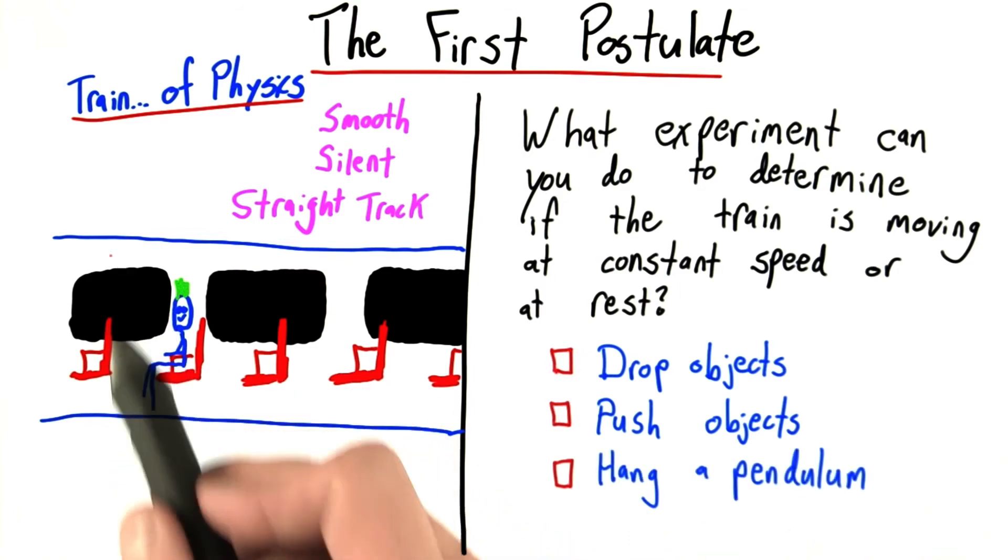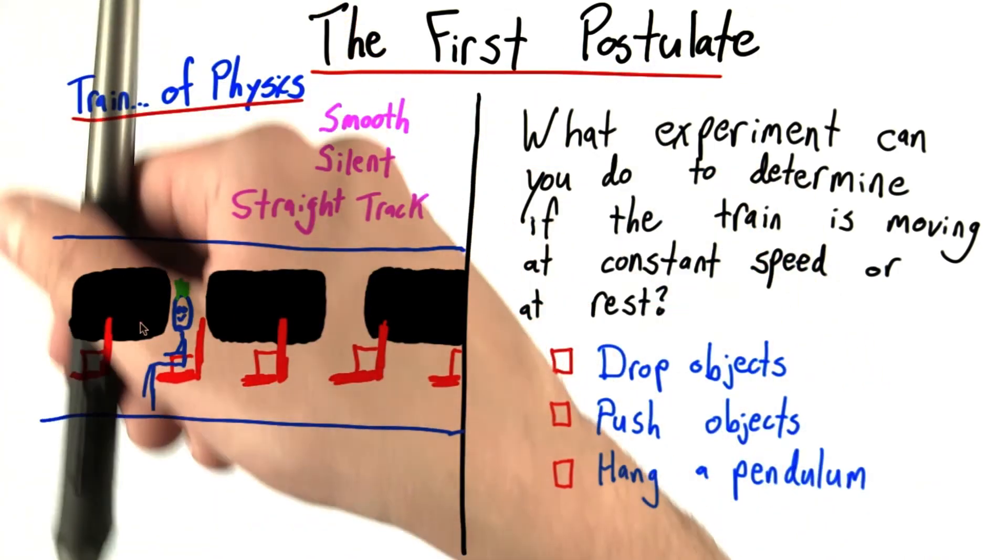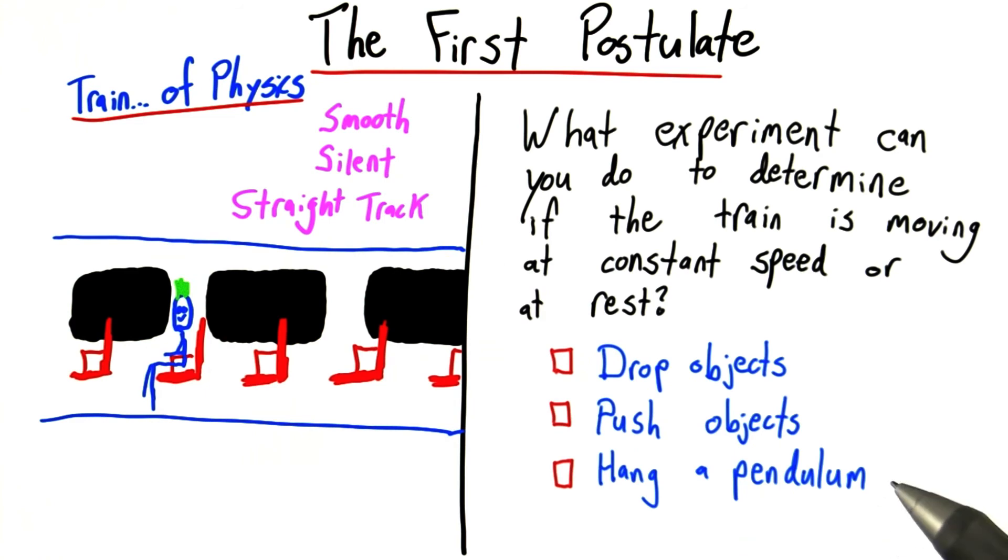Or maybe you could hang a pendulum from the ceiling, and if the train was moving forward, maybe the pendulum would be hanging in some strange way. I want you to think about these options, and select all that apply before you hit submit.